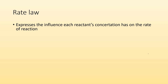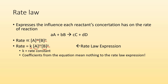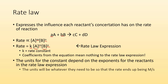Rate law expresses the influence each reactant's concentration has on the rate of reaction. So if this is my generic reaction, the rate is proportionate to the concentration of A to some power and B to some power. The rate law expression is stated as: rate equals some constant times the reactant concentration to some power times the other reactant concentration to some power. K is a constant, and the coefficients from the balanced equation mean nothing in the rate law expression — notice how the stoichiometric coefficients aren't in the rate law at all. The units for the constant depend on the exponents for the reactants in the rate law expression.